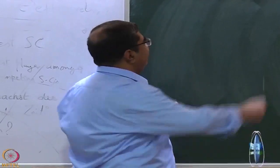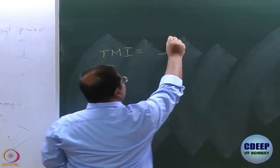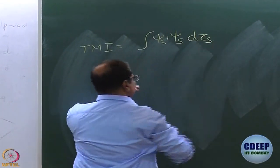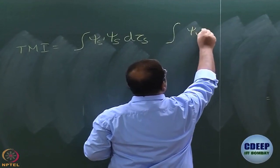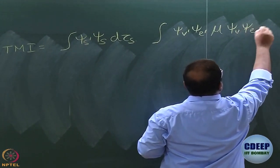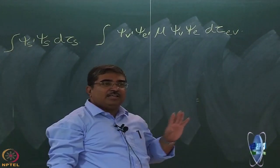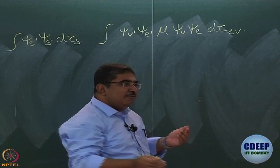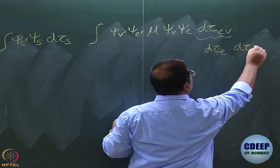Let me just write the transition moment integral. I will write using integrals for a change. Psi s dash psi s d tau s, then we had written integral psi v dash psi e dash mu psi v psi e d tau. This d tau is ev, it contains electronic and vibronic coordinates. When we worked under Born-Oppenheimer approximation, we said that this can be written as d tau e multiplied by d tau v.